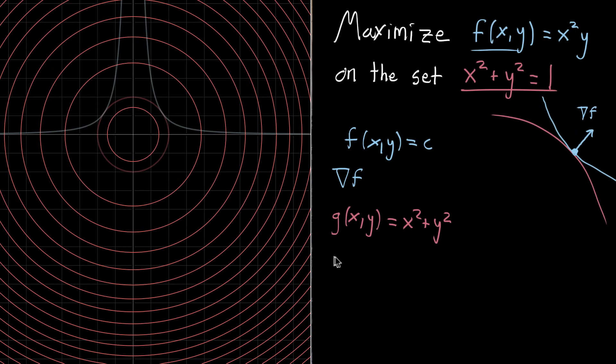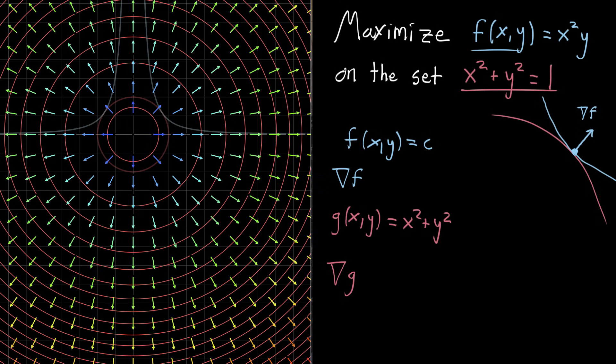And if we took a look at the gradient of g, and we go over and ask about the gradient of g, it has that same property, that every gradient vector, if it passes through a contour line, is perpendicular to it.